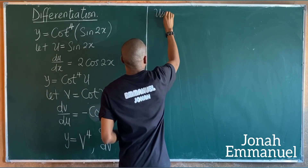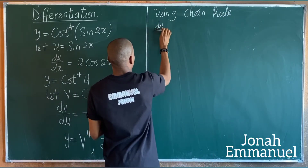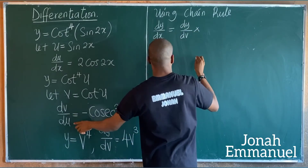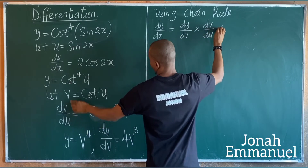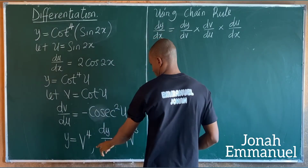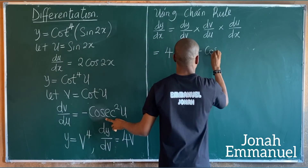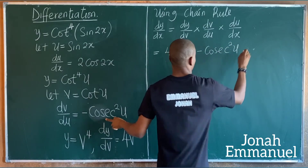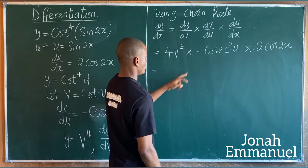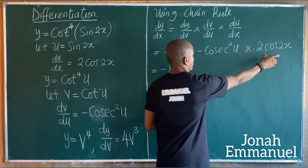Using chain rule: dy/dx equals dy/dv times dv/du times du/dx. Substituting: dy/dv is 4v cubed, times dv/du is minus sin u, times du/dx is 2 cos 2x. Multiplying constants: 4 times 2 gives 8, with the minus giving minus 8.